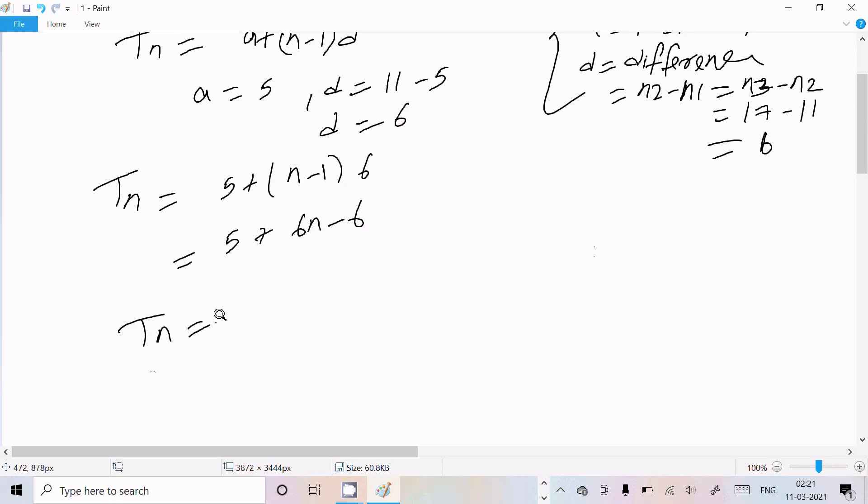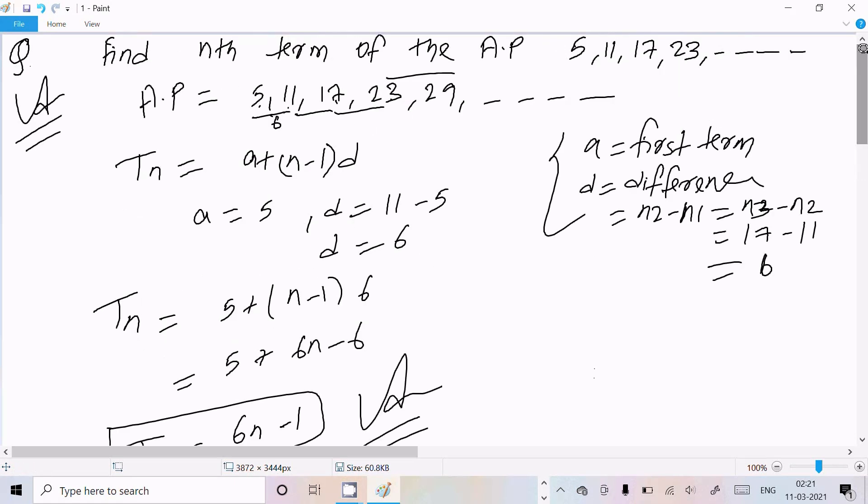So Tn = 6n + 5 - 6 - 1. This is the answer. This is the way...